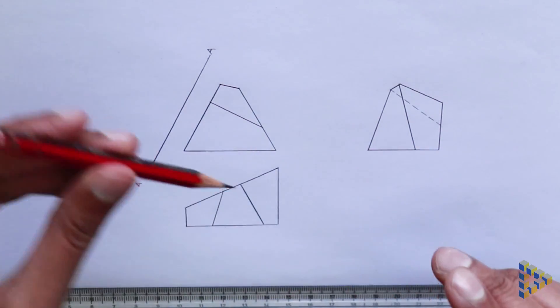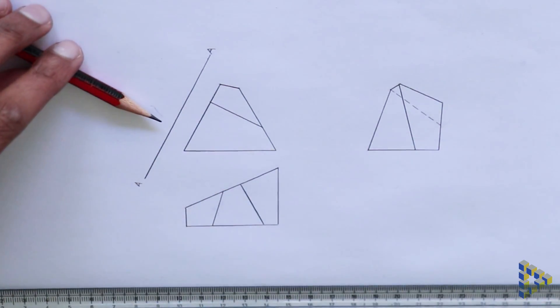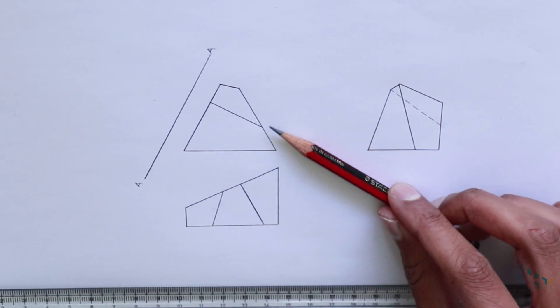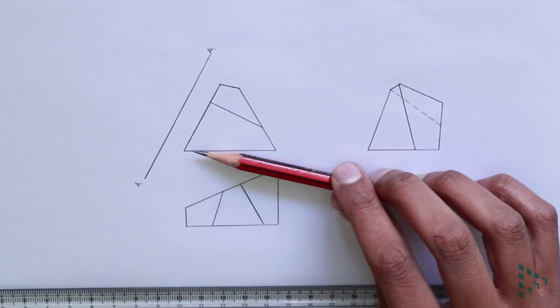Hey guys, let's consider this example in first angle orthographic projection. Given the front, left and plan views, we are required to first draw the primary auxiliary view of the front view about the axis AA.